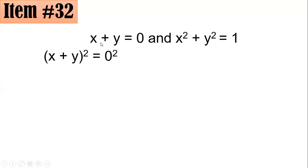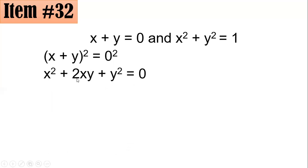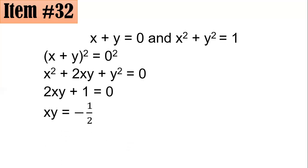Squaring x plus y gives x squared plus 2xy plus y squared equals zero. From here we know that x squared plus y squared equals one, so by substitution we have 2xy plus 1 equals zero. Subtracting one from both sides gives 2xy equals negative one.